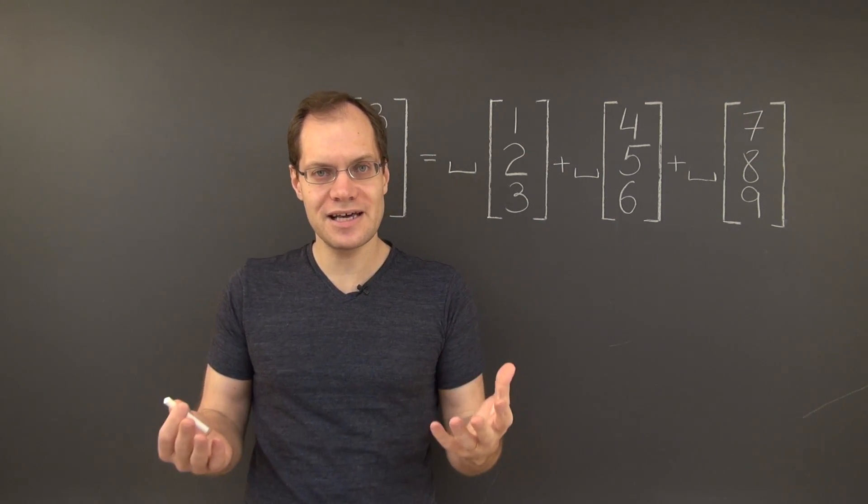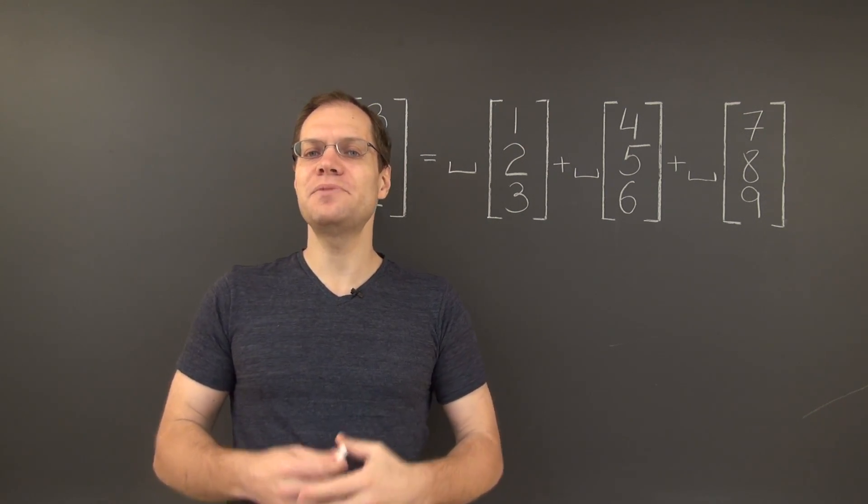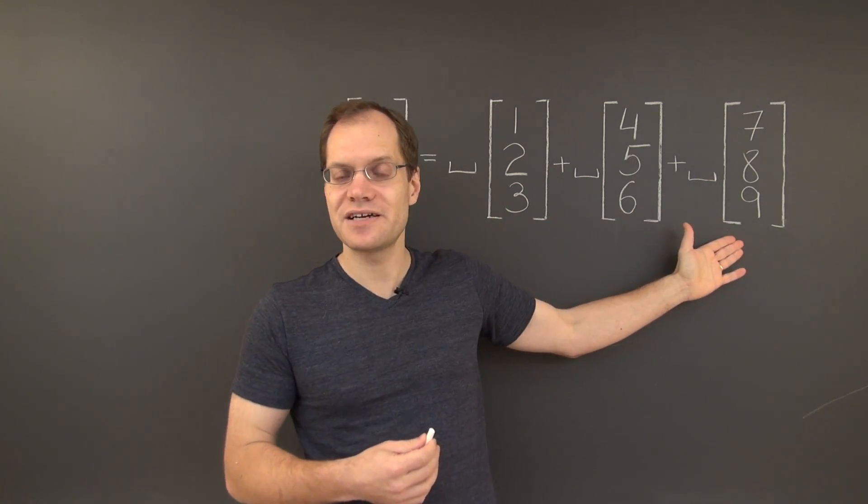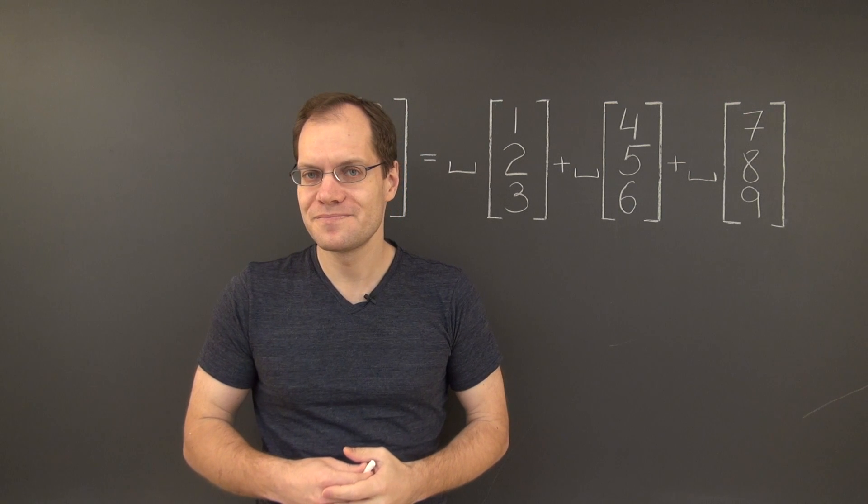But of course, this argument forgets that we can multiply by fractions. In fact, we can multiply by all real numbers. And if we were to multiply any one of the decomposition vectors by one-third, this property would go away.